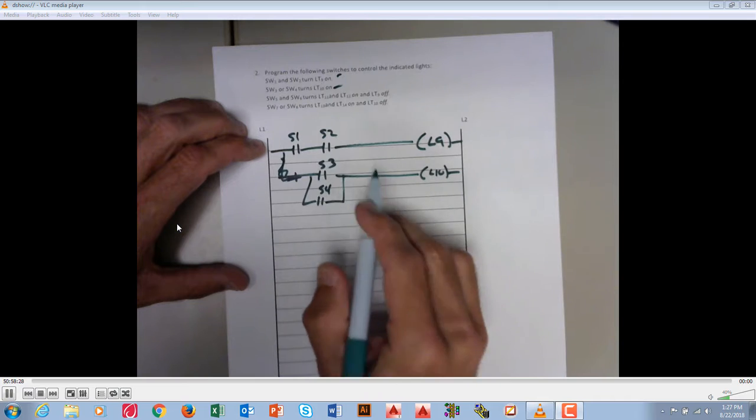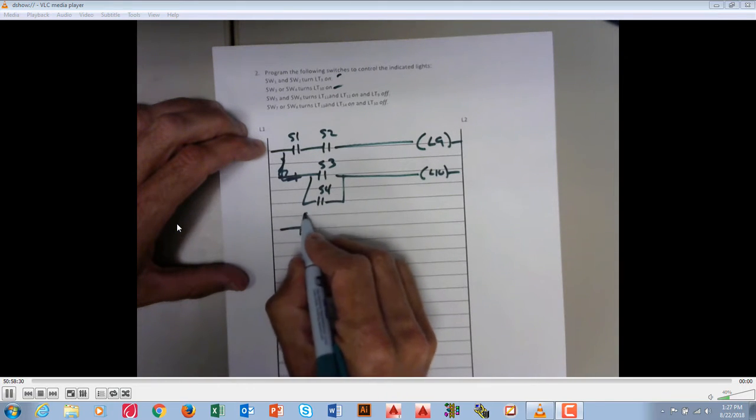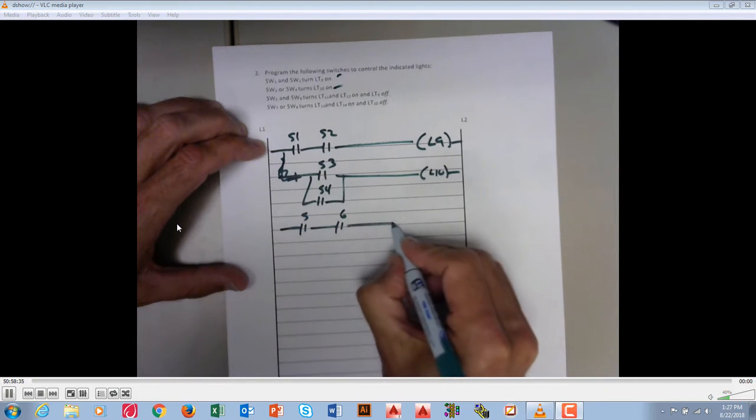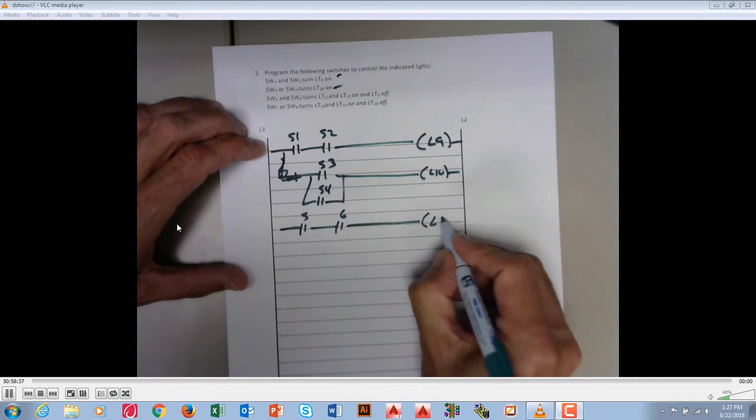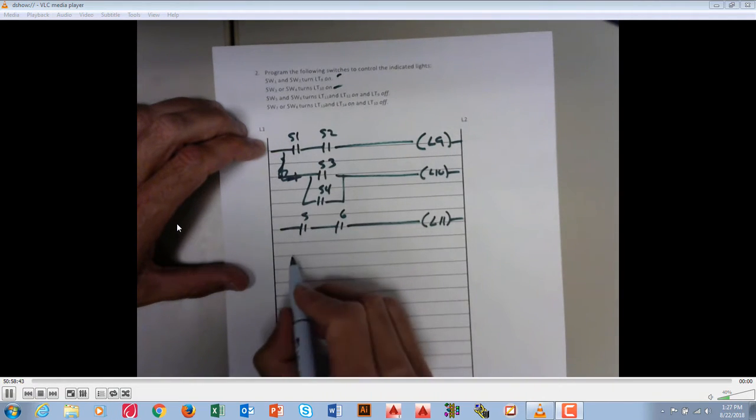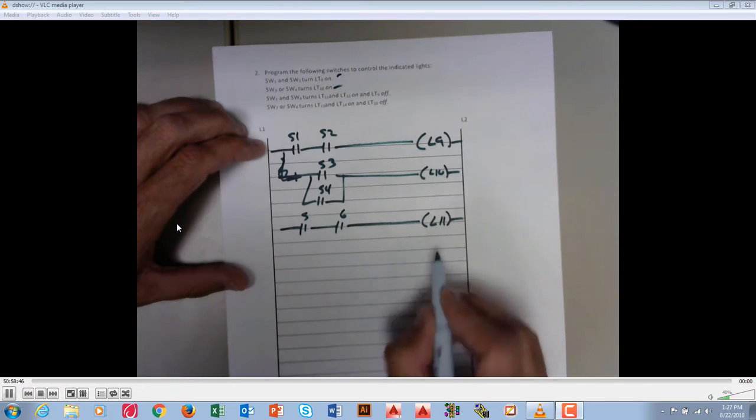Switch 5 and 6 turns lights 11 and 12 on. Now because we have to turn light 12 on, we could do it two ways. We could have 5 and 6 turn on 12.